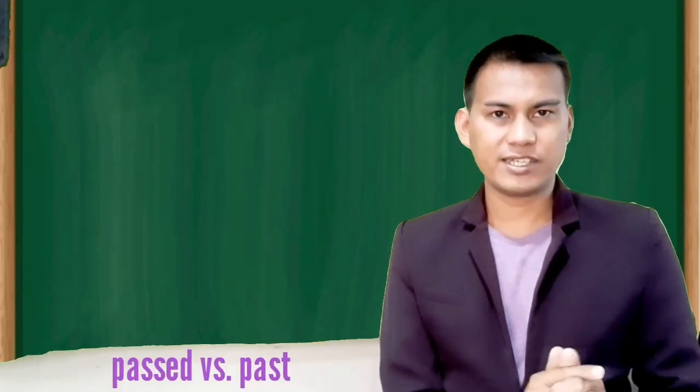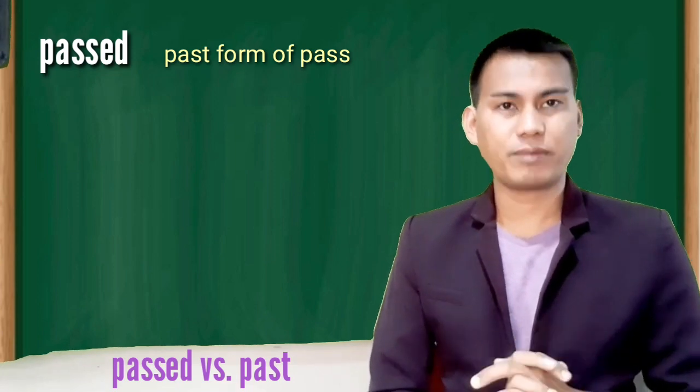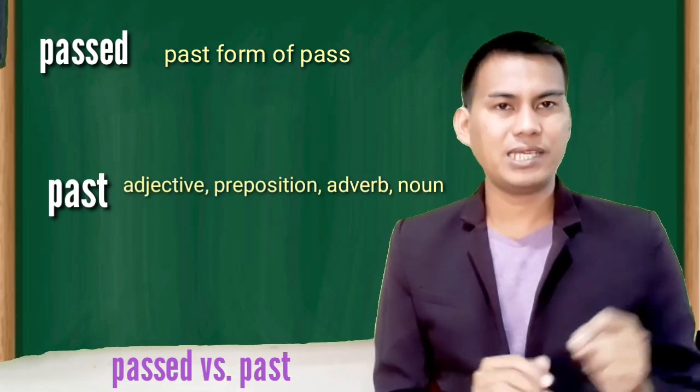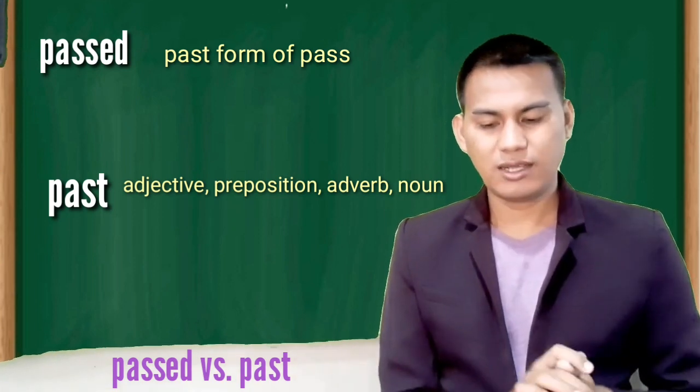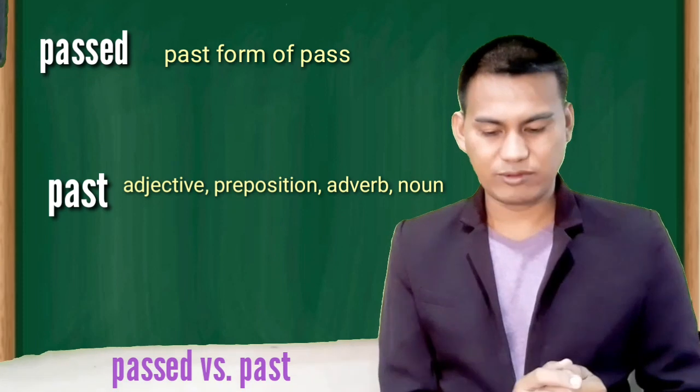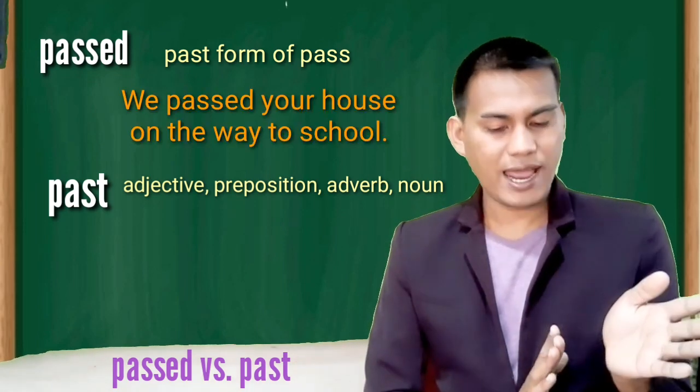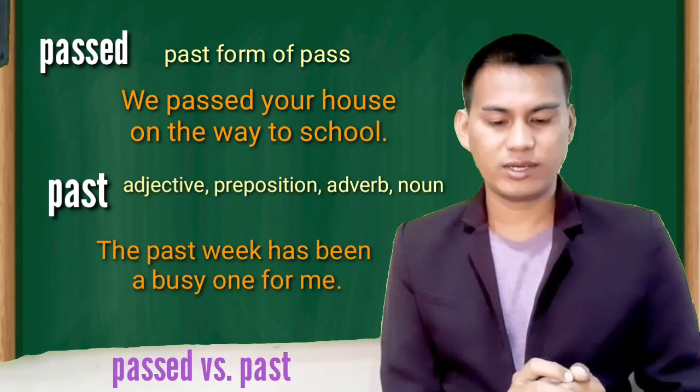Passed versus past. Passed is a past form and a past participle of the verb pass. Past, P-A-S-T, can be an adjective, a preposition, an adverb, or a noun. Let's have these examples. We passed your house on the way to school. The past week has been a busy one for me.